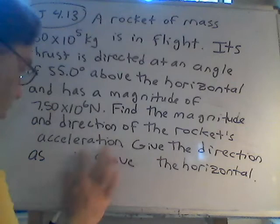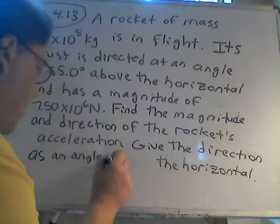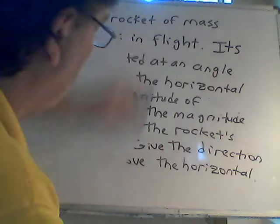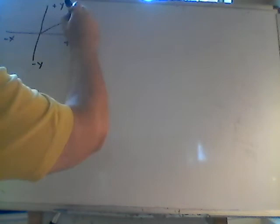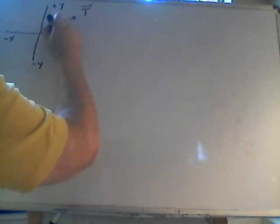So let's work the problem. I have a Cartesian coordinate system with plus x, minus x, plus y, minus y. I have a thrust force T at angle theta equals 55.0 degrees above the horizontal. I'm also given the mass m = 4.50 × 10⁵ kilograms. I'll need to break the thrust into components and also account for the weight of the rocket acting downward — which is why the final direction of acceleration won't simply be 55 degrees.